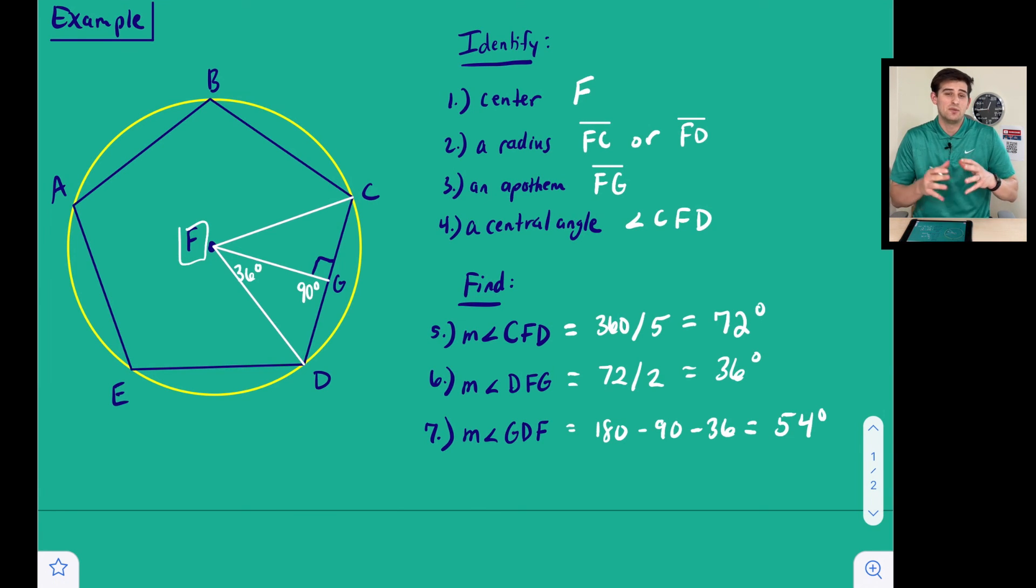So that's how you find angle measures in regular polygons, and that's the definition of the center, the radius, the apothem, and how we find central angles.